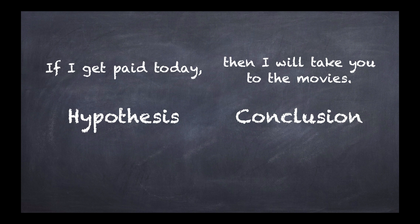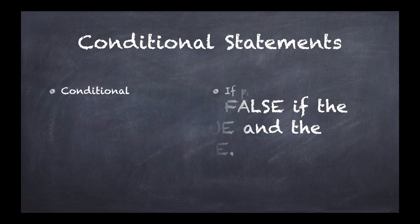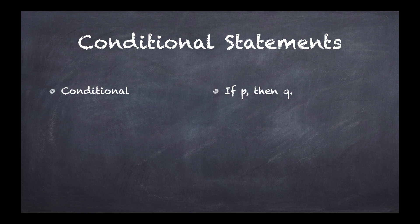But the first thing we need to understand is this: A conditional is false if the hypothesis is true and the conclusion is false. So here's our original conditional statement, if P then Q. This is just a generic one to show you the basic rule. Our first thing that we can do is we can just switch the order. So instead of if P then Q, it's now if Q then P. We call that the converse. So instead of if I get paid today then I will take you to the movies, it suddenly becomes if I take you to the movies then I get paid today.